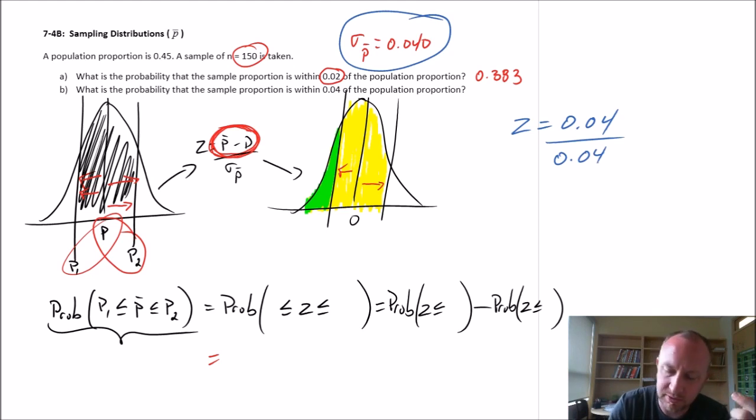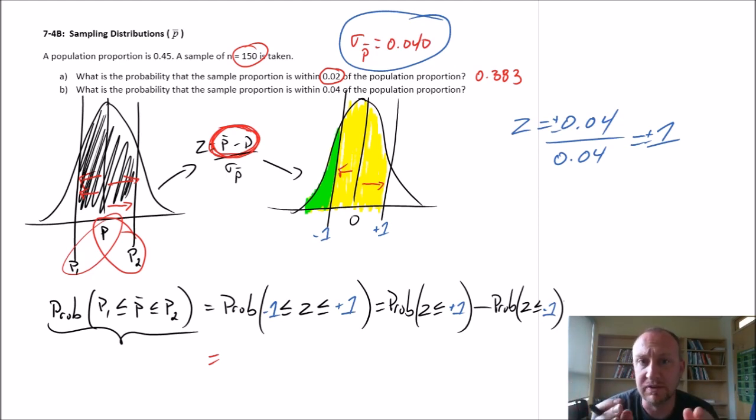So my z-score, now that difference, plus or minus 0.04, divided by the standard error which hasn't changed, 0.04. Well, that's a straightforward calculation now. This is going to be equal to 1, plus or minus, because we're looking at either side. So there's positive 1, there's negative 1. So there's no surprise. We've doubled the width of our proportion, so the value of that z-score doubles, given the standard error is unchanged.